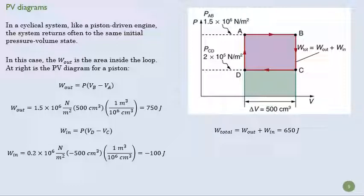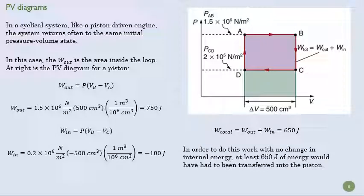So then we can find W total by adding the two of them. We find it's 650 joules. What does that mean? It means that this piston has done 650 joules of work, and it means that at least that much energy, and as we'll see, a good bit more would be required in order to make that heat engine work.